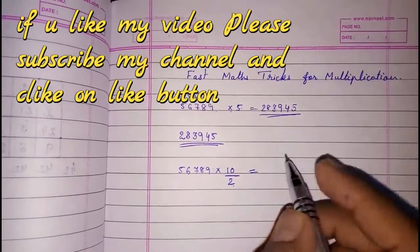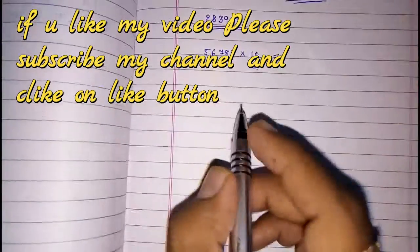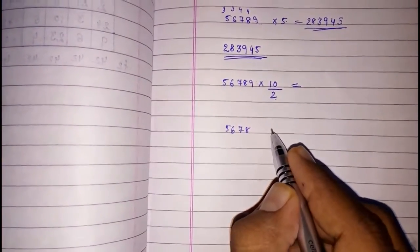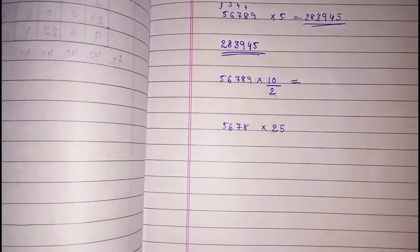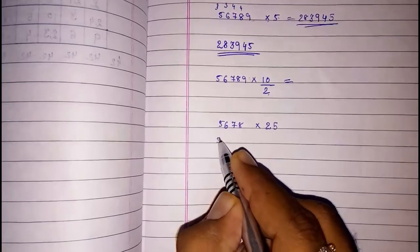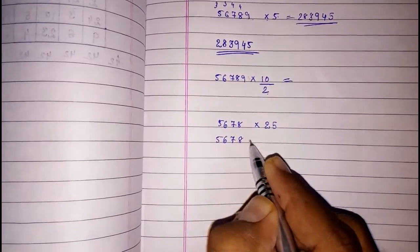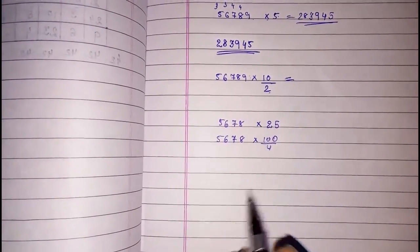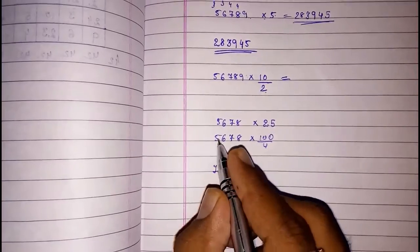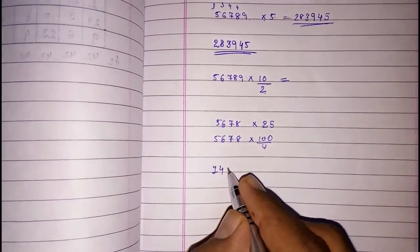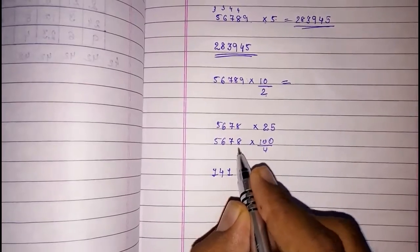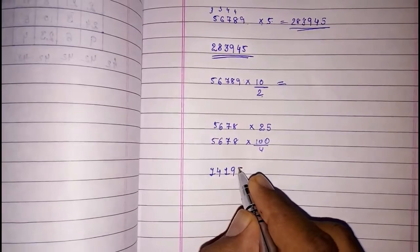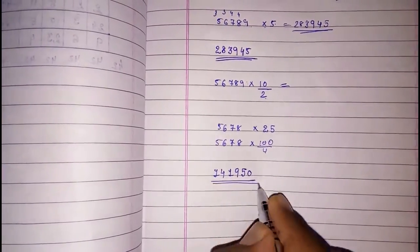We can use this trick in 25 also. What we have to do? Look, if they had given us any number like 5678 and then you have to multiply that number with 25, so instead of 25 we will use 5678 into 100 by 4. 100 by 4 is also 25, so directly multiply and cancel it. 4×1 is 4, now 16, so 4×4 is 16 again, 4×1 is 4, then 3 remaining, 9×4 is 36, so this will be your answer.